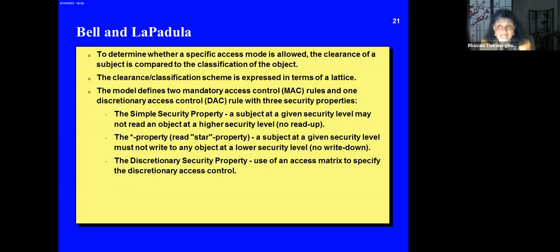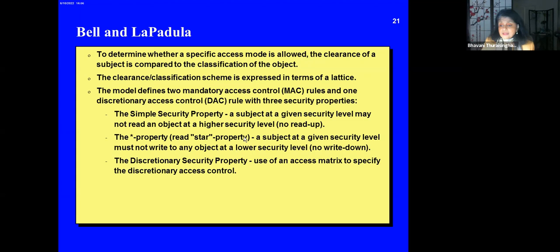The second property is the star property — no write down. A subject at a given security level must not write to any object at a lower security level. A secret-level subject cannot write into a confidential or unclassified file, but it can write into its own secret file or even up into a top-secret file. You may say it's absurd to write up, but it cannot read what it wrote because of the no-read-up rule. At that time they were only concerned about confidentiality — users should not get anything above their level.